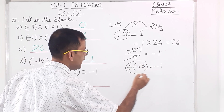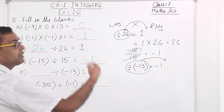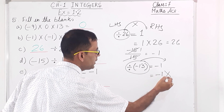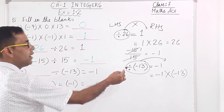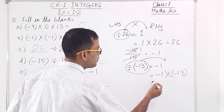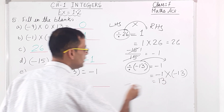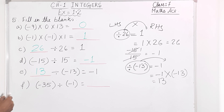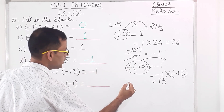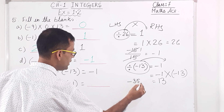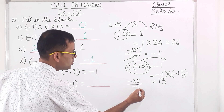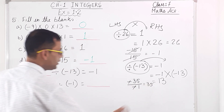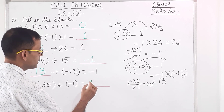Next blank: dash divided by minus 13 equals minus 1. Moving minus 13 to the right side, division becomes multiplication: minus 1 times minus 13. Minus into minus is plus, and 1 times 13 is 13. So the answer is 13. Last one: minus 35 divided by minus 1. Minus minus cancels, and 35 divided by 1 is 35. The answer is 35.